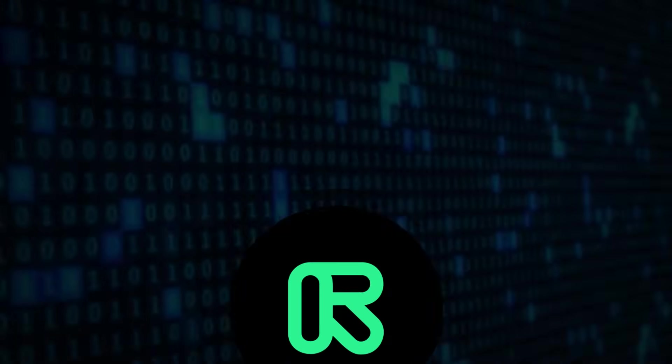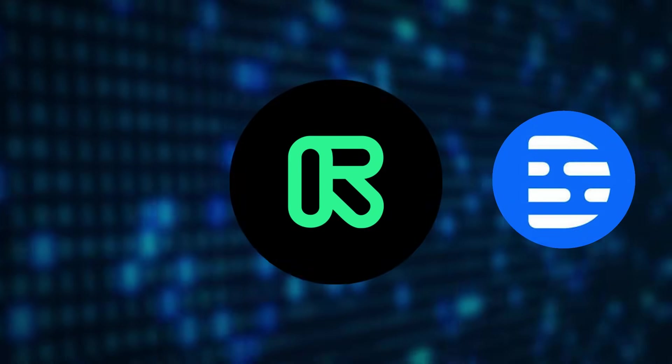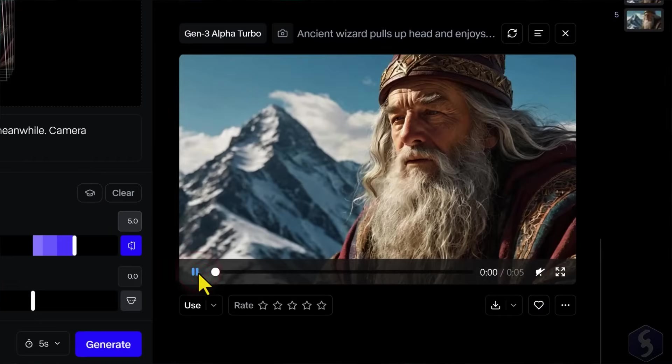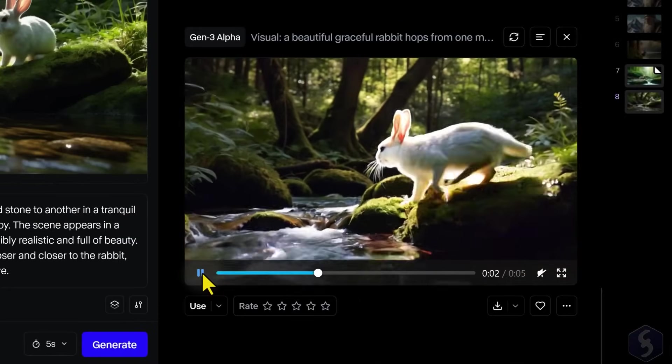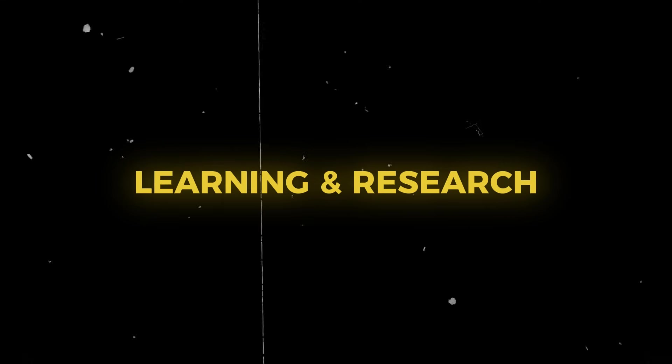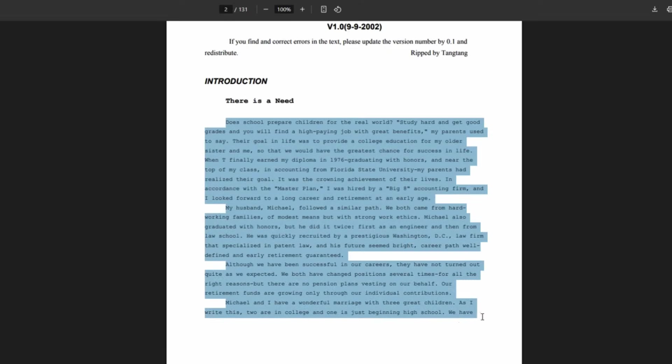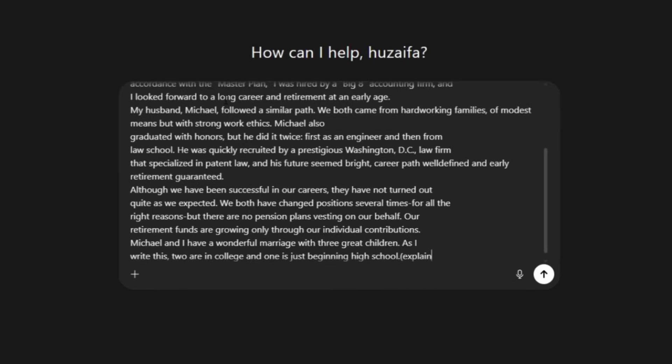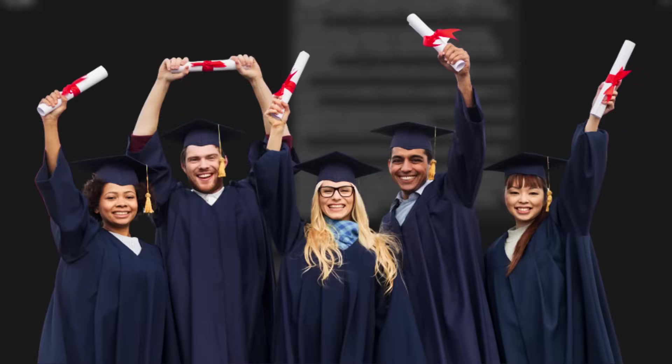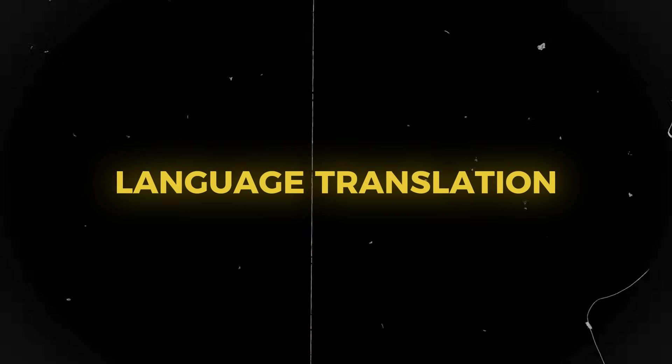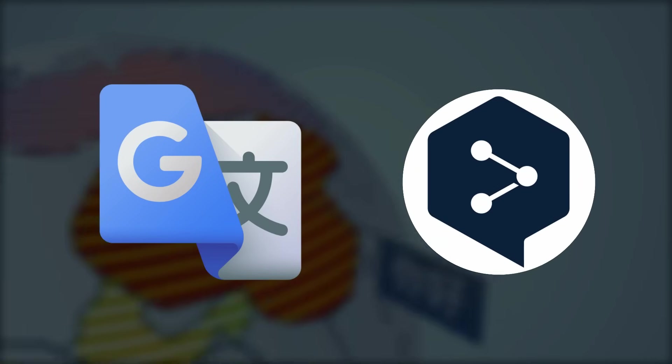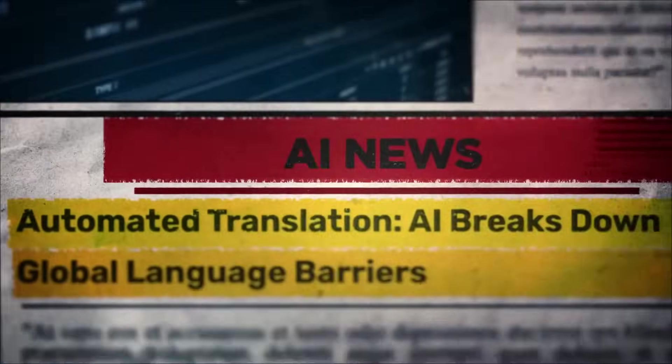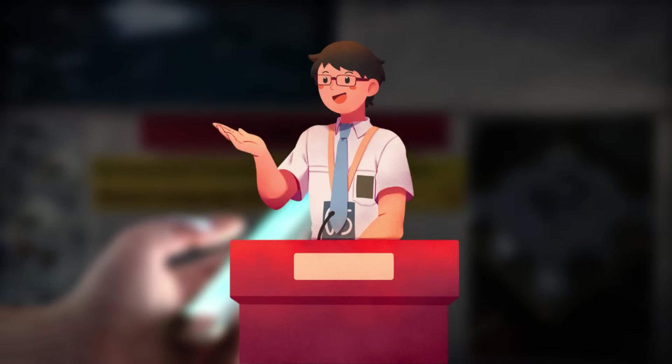Video editing: Runway AI, Descript or Pictory can automatically trim clips, add subtitles, or even create AI-generated voiceovers. Learning and research: copy a paragraph from a textbook and ask AI to summarize or explain it in simple terms. Perfect for students or professionals. Language translation: communicate globally with Google Translate or DeepL. AI can instantly translate text or even real-time speech.